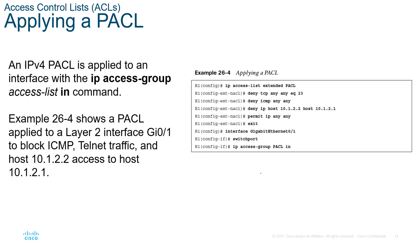Configuring a PACL is straightforward — similar to a named ACL. On a switch, configure it like a named ACL, set the interface to switchport mode, then use 'ip access-group [name] in'. You can only filter inbound currently. This allows you to filter traffic on layer 2 devices.